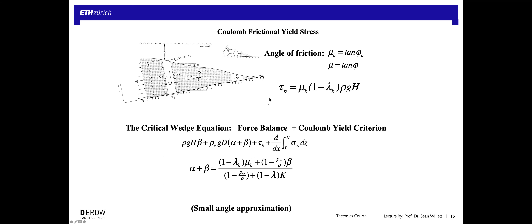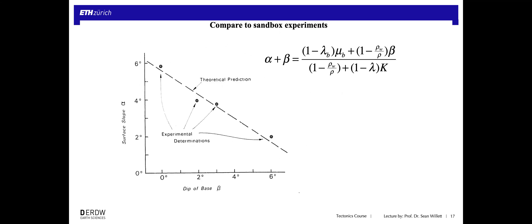What that lets us do is take the force balance, combine it with the Coulomb yield criterion, put them all together, and write one expression that gives the geometry — alpha plus beta, the taper angle — in terms of the physical properties of the wedge: the densities (which are minor), the fluid pressures (important), and the friction coefficients (also important). Remember K is also a function of the physical properties. This, using the small angle approximation, is what we call the critical wedge equation.